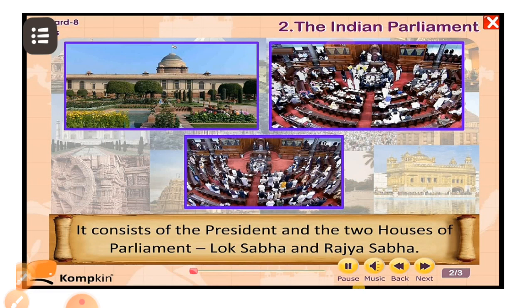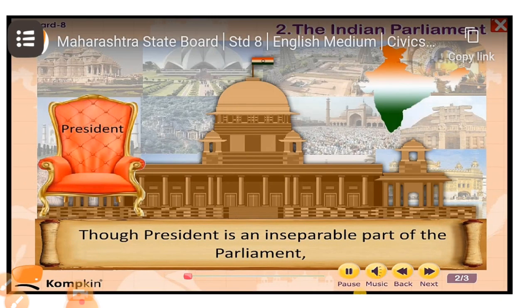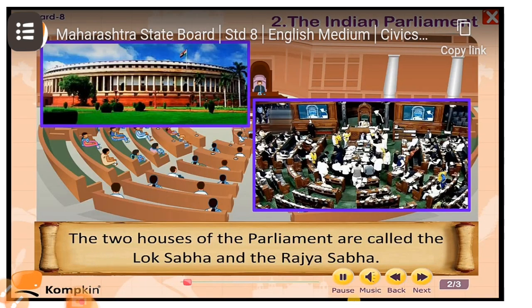Here, parliament consists of the president, Lok Sabha, and Rajya Sabha. Though the president is an inseparable part of the parliament, he or she cannot participate in the discussions of the houses of the parliament. The two houses of the parliament are called Lok Sabha and Rajya Sabha.